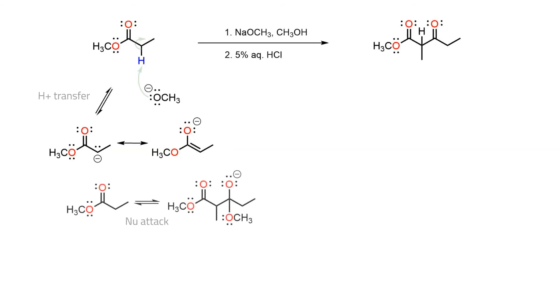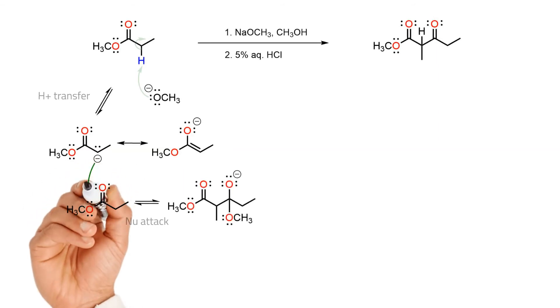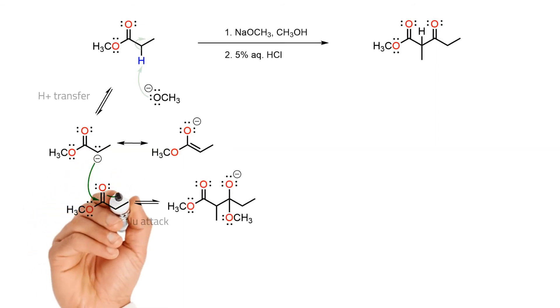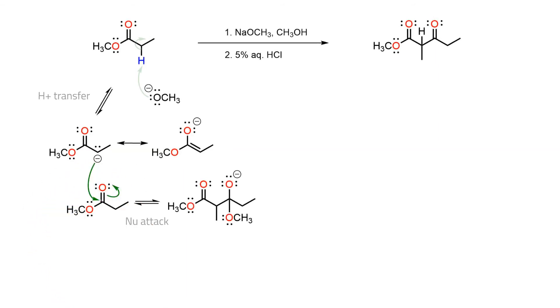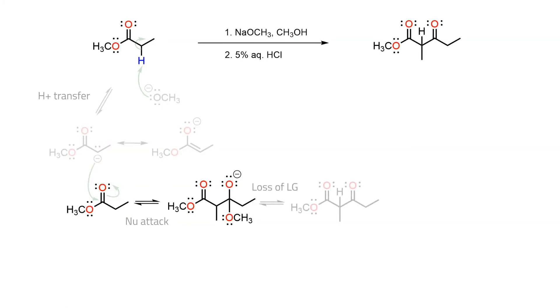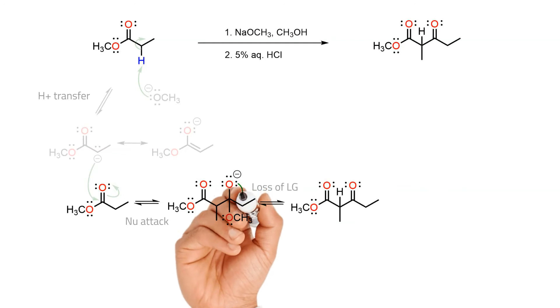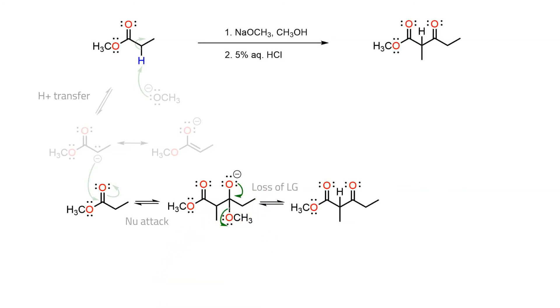Since we now have a suitable nucleophile in the enolate, it will attack the electrophilic carbonyl of the ester to give a tetrahedral intermediate. This then collapses, with loss of an alkoxide leaving group, to give a beta-keto ester.